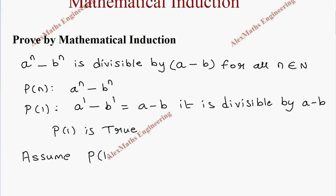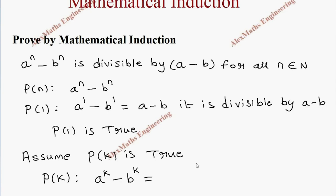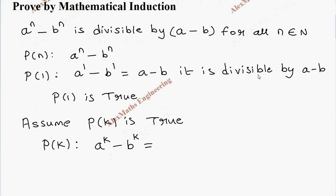Now assume P(k) is true. So P(k) is a^k minus b^k, and since it is divisible by (a - b), we can say it equals some constant times (a - b) — that is the only way it will be divisible by (a - b).